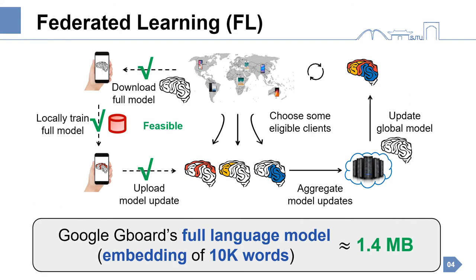Federated learning proposed by Google is a potential solution to collaborative training. In each round, some eligible clients are chosen to download the full model and then upload the model updates after local training. The cloud server aggregates the model updates to update the global model. Google has deployed federated learning on its Android keyboard, called Gboard, to polish the language model. The model contains the embedding of 10,000 words, and the size is roughly 1.4 megabytes.